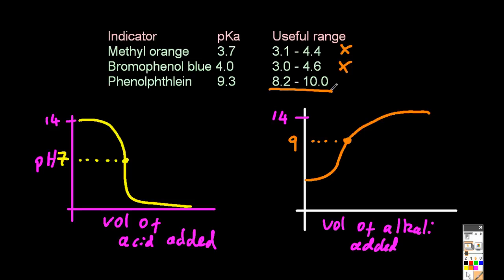Well, none of them, but phenolphthalein's pretty close at 9.3, and the useful range encompasses 9. So phenolphthalein would be a good indicator to use for this titration.